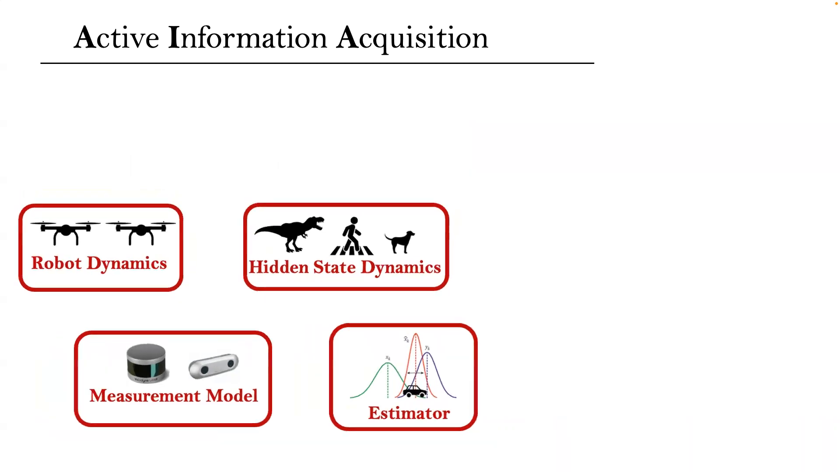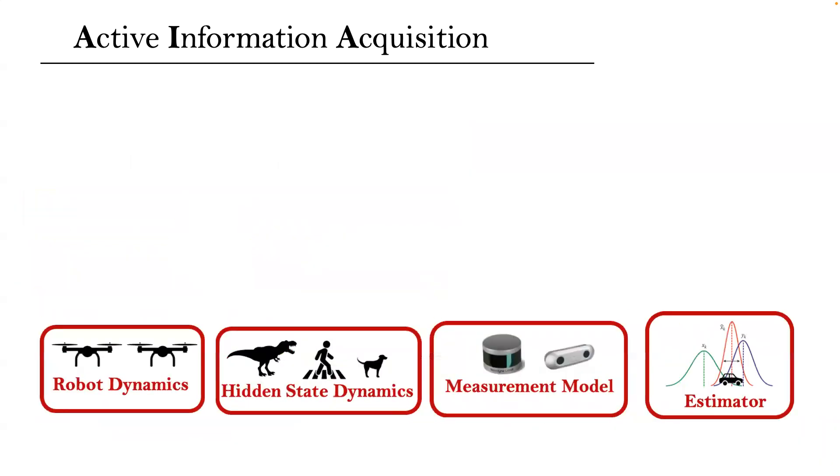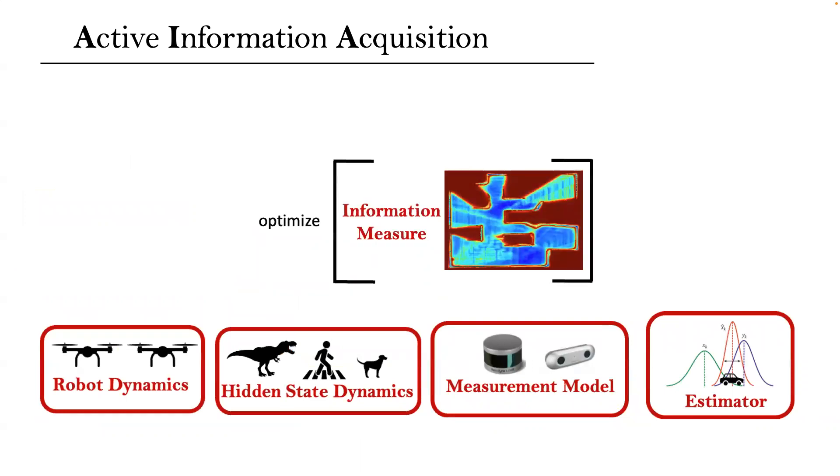For designing the paths, an information metric drives the robots to evaluate how informative their measurements are for localizing the targets. For example, the drones should design paths to minimize the inherent uncertainty over the locations of the targets. Given all the components, the active information acquisition seeks to compute the planning horizon and control inputs to optimize an information measure to better estimate a hidden state expressing a phenomenon of interest.